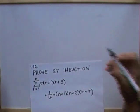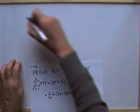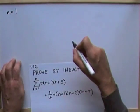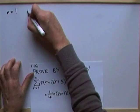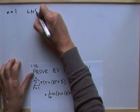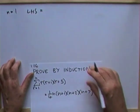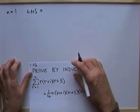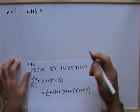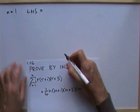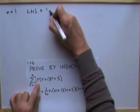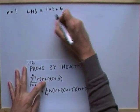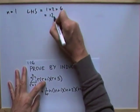So, same as before, starting off by checking that it's in fact true for n equals 1. At n equals 1, notice the technique: demonstrate left-hand side, right-hand side. The left-hand side would be the first term: 1 times 2 times 6, so that's going to come to 12.